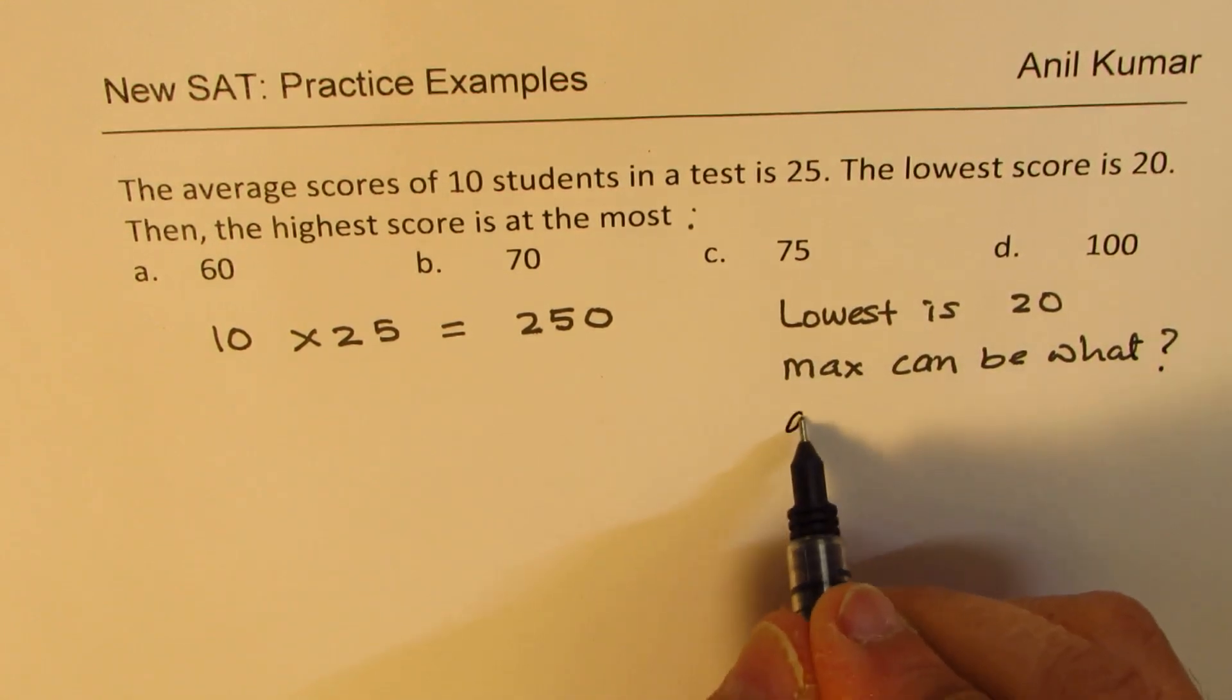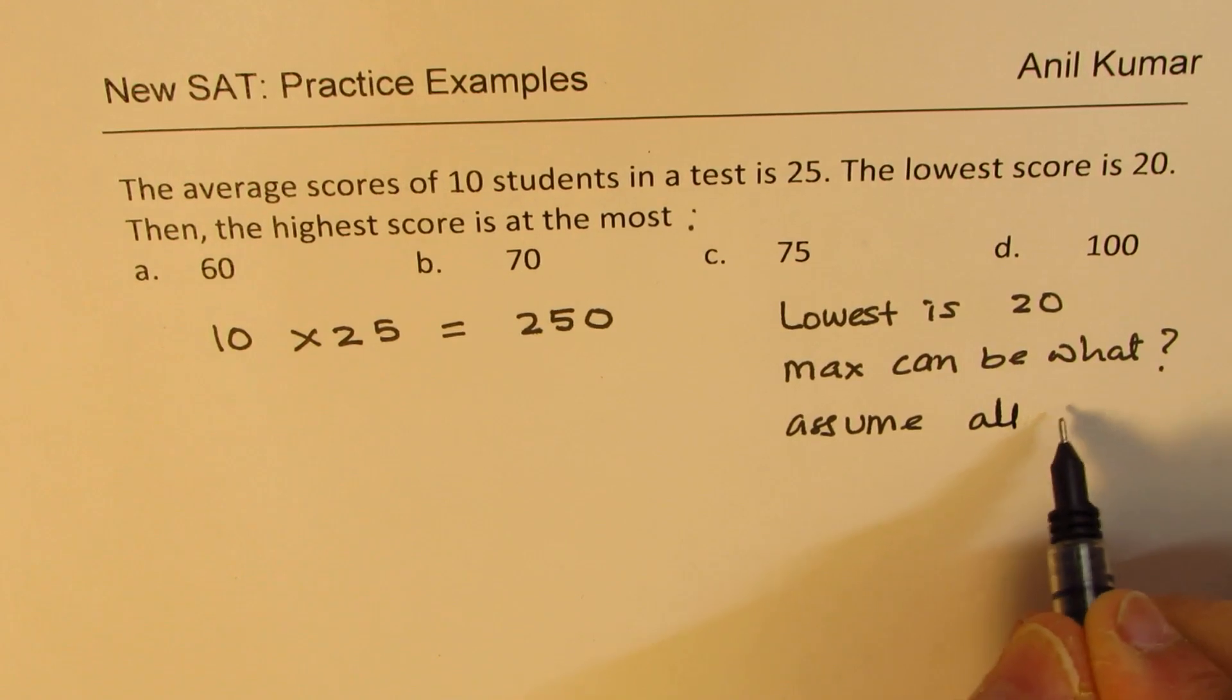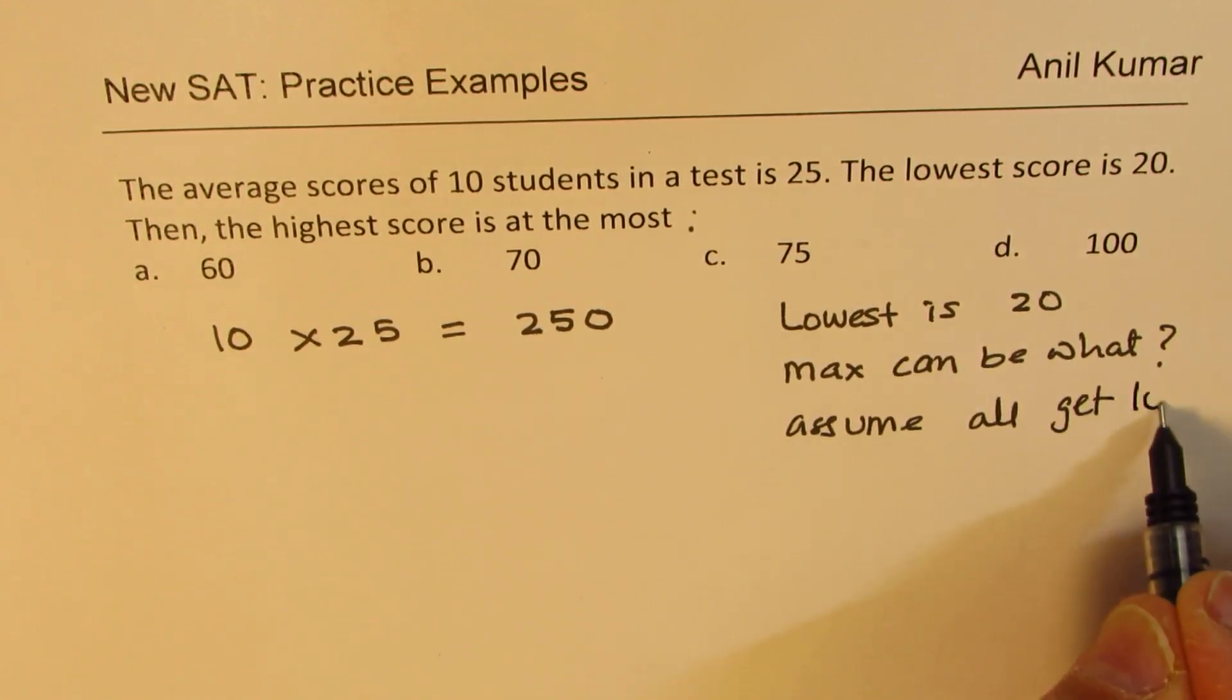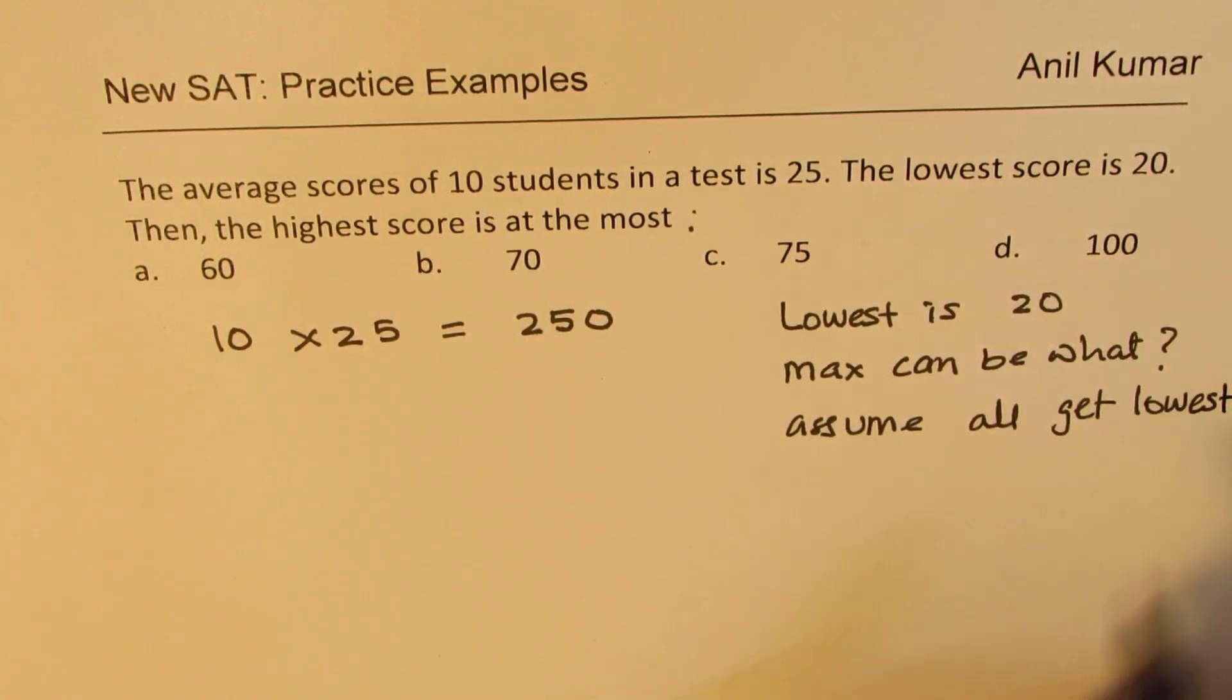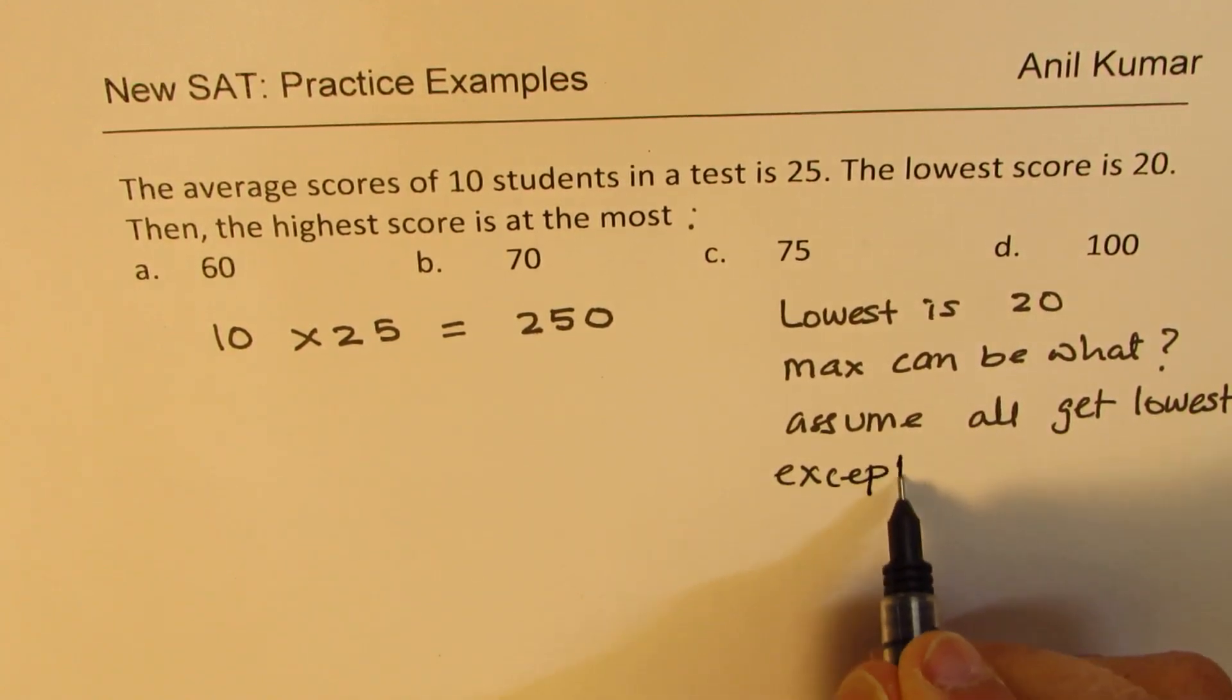So we need to assume that all get lowest. Does it make sense? All get lowest except one person.